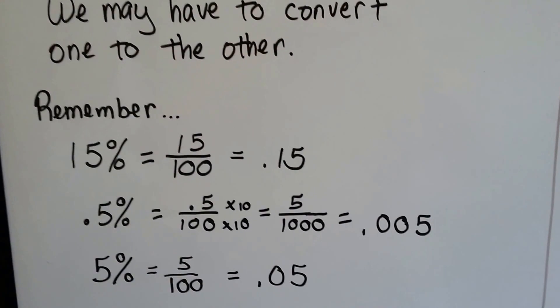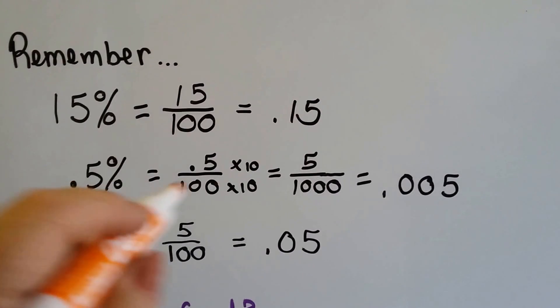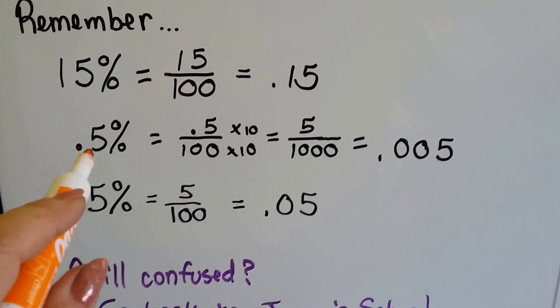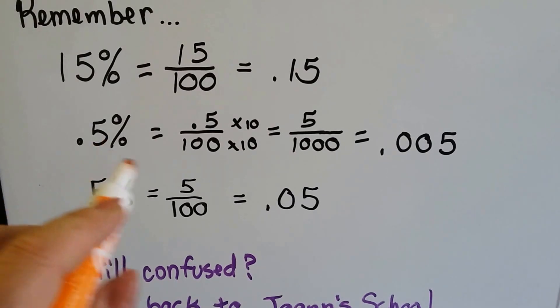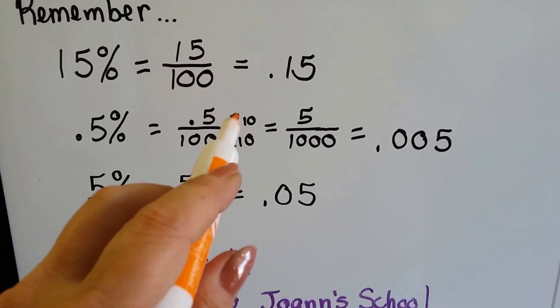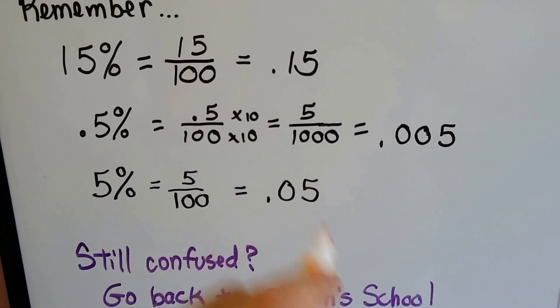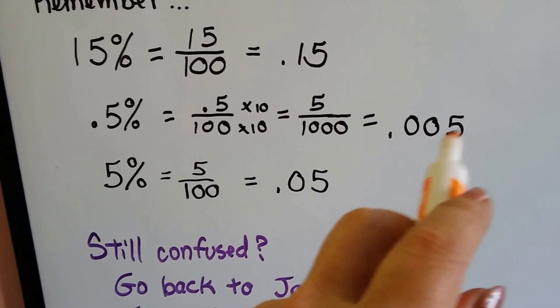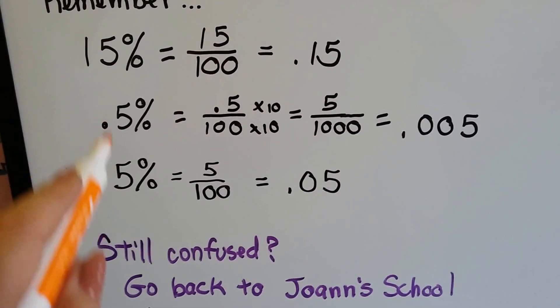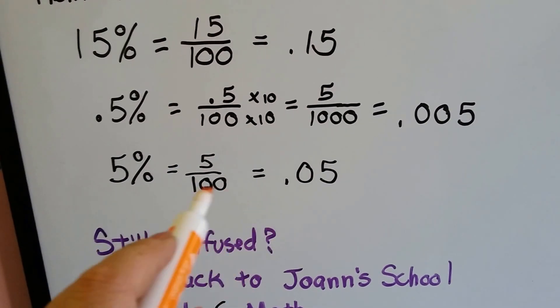So if you remember, 15% is equal to 1,500ths. That's what 15% means. And it could be written as 0.15. And 0.5% means half of a percent. That would be 0.5 over 100. We multiply the numerator and denominator by 10, and that will remove that decimal point. We'll have 5 one-thousandths. And it will be written as 0.005. 5%, there's no decimal point, it's just 5%. That's 5 out of 100. That's five hundredths, or 0.05.